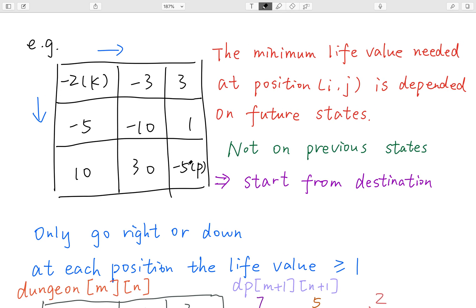Actually, one thing for sure is that at the bottom right point, our health point can only be 1, right? I mean, in the end, our health point be 1, that's enough. So that's the minimum.